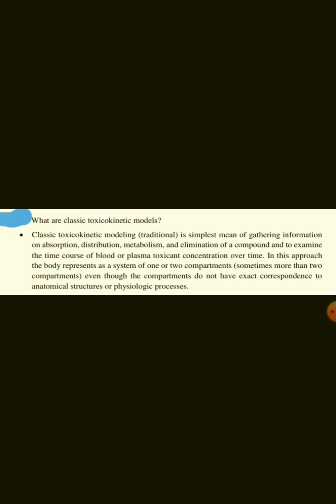What are classic toxicokinetic models? Classic toxicokinetic modeling is the simplest means of gathering information on ADME of a compound and to examine the time course of blood or plasma toxicant concentration over time. In this approach, the body is represented as a system of one or two compartments, even though the compartments do not have exact correspondence to anatomical structures or physiological processes.